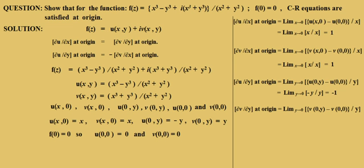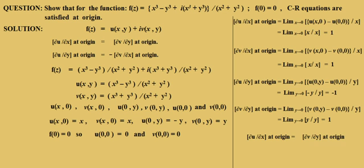Now ∂v/∂y at origin: its formula is the limit as y→0 of [v(0,y) − v(0,0)] / y. The value of v(0,y) = y, so ∂v/∂y at origin equals the limit as y→0 of y/y = 1. We see that ∂u/∂x = 1 = ∂v/∂y at origin, and ∂u/∂y = −1 = −∂v/∂x at origin. Therefore the CR equations are satisfied at the origin, which is what we had to prove.